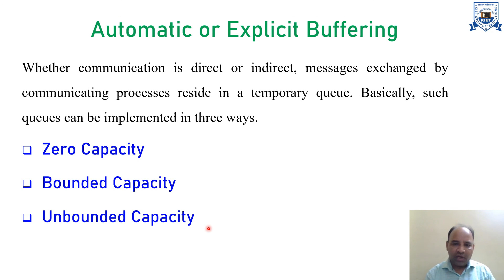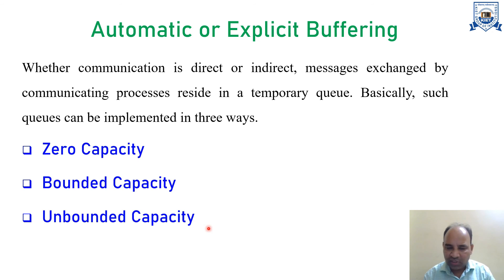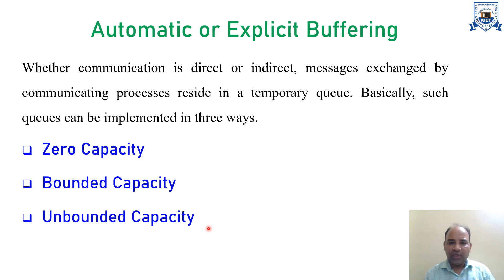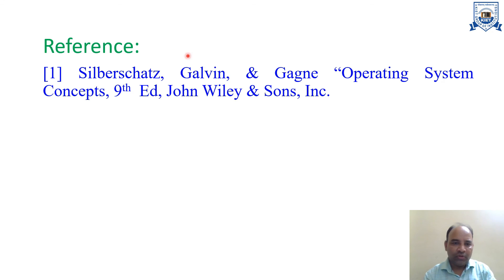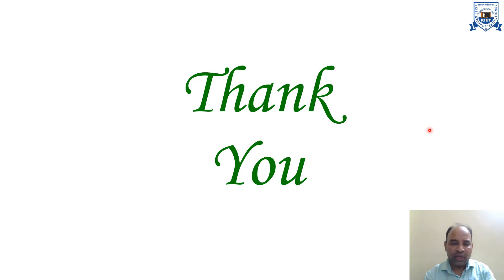To summarize, we discussed independent processes and cooperating processes, then two different modes of communication: shared memory system and message passing system. Within message passing, we discussed three variants: direct and indirect communication, synchronous or asynchronous communication, and automatic or explicit buffering. Thank you so much for your time.